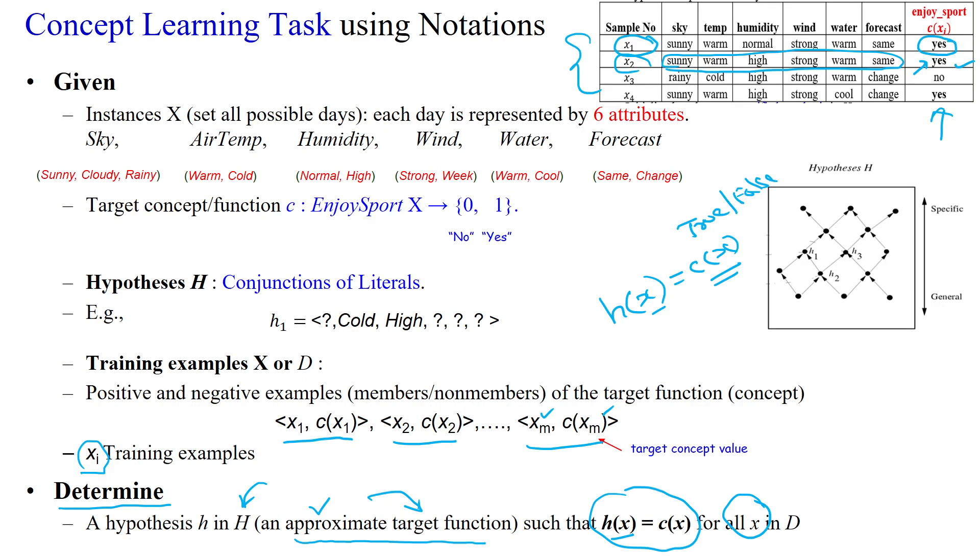So this is the way to denote the particular problem statement using concept learning. So here whichever hypothesis is satisfying all the training samples in this location, then that hypothesis will be the best fit hypothesis among N number of hypotheses available in the hypothesis space capital H.